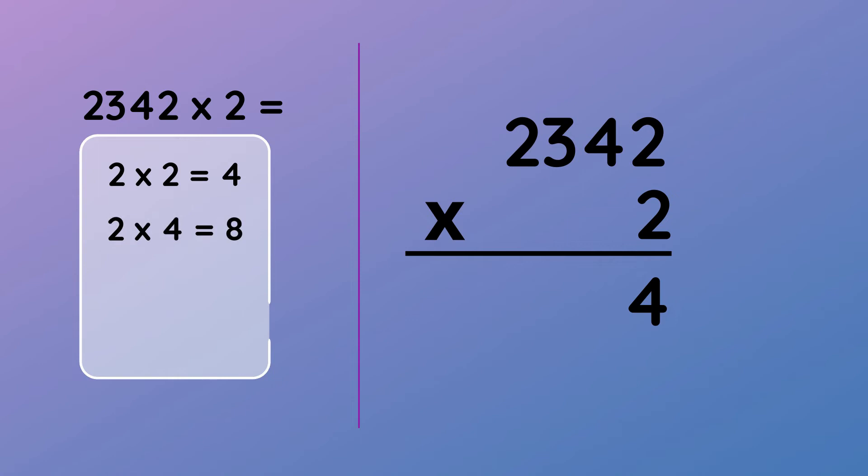Then 2 by 4 equals 8. 8 goes in the answer space under the tens column. Then 2 by 3 equals 6. 6 goes in the answer space under the hundreds column. And lastly 2 multiplied by 2 equals 4. 4 goes under the answer space in the thousands column. Notice that all the answers are between 0 and 9 so they were all placed into the answer space.